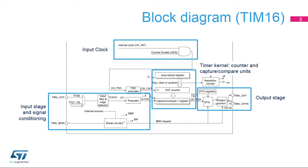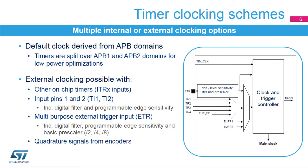The block diagram of TIM-16 shows that the timer kernel consists of a 16-bit up-counter coupled with an auto-reload register to program the counting period. The timer channel is controlled by a capture-compare register, and the counter is fed by the APB bus clock. On the left are the input stage and input conditioning circuitry, while on the right is the output stage. TIM-X-CH1 appears on both sides, indicating it is both input and output capable.